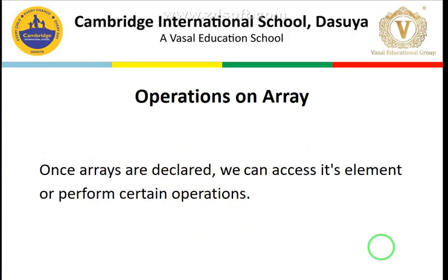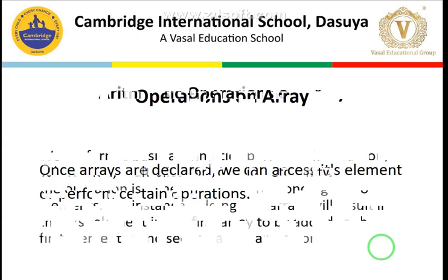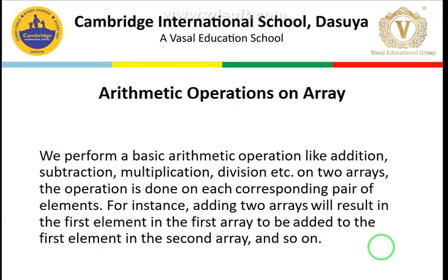We have discussed a number of operations on arrays like addition, subtraction, multiplication, division, and multiplication of matrices — these are two different things. Once arrays are declared, we can access their elements or perform certain operations. For arithmetic operations, adding two arrays results in the first element of the first array being added to the first element of the second array. The corresponding elements of each array are operated upon, just as in mathematics.